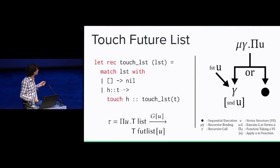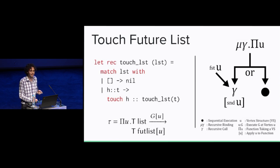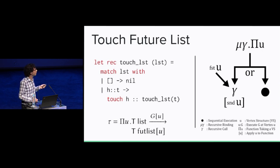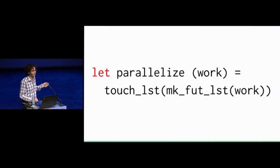Here's another example: touch-future-list. It's very similar — instead of creating futures, it touches futures. At this point, many of you might be wondering why this is worth exploring as a specific problem. As a motivating example, I made this function called parallelize, which takes in a list of any arity and parallelizes all of the work on it. What it does is take a list, put it in a list of futures that execute, and then you touch the list. Thank you.